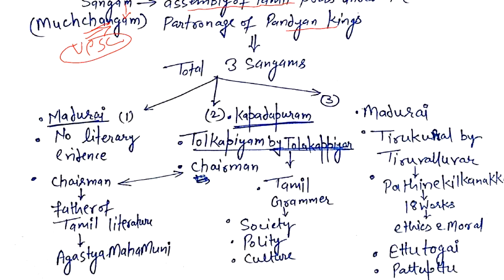There were three Sangams. The First Sangam was organized at Madurai, but no literary evidence survives from it. The chairman of the First and Second Sangam was Agastya Muni, who is known as the father of Tamil literature. The Second Sangam was held at Kapadapuram.